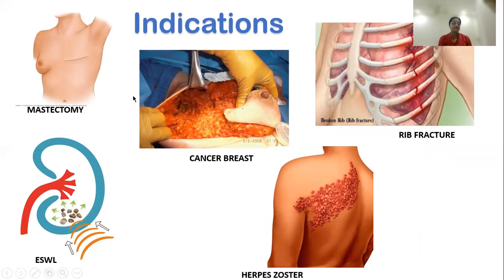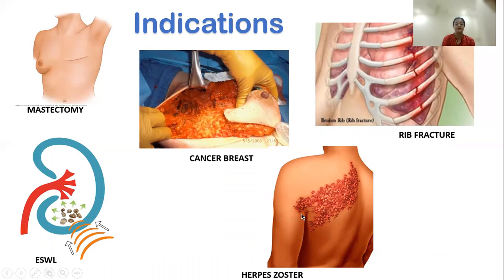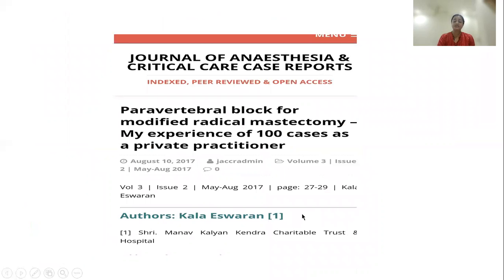Indications: for simple mastectomy, a single-level paravertebral block at thoracic level T5 is sufficient, as is the erector spinae plane block. For cancer breast surgeries involving the axilla or muscles, you need to add pec blocks or serratus anterior plane block along with a paravertebral block or erector spinae plane block. For rib fractures, continuous infusion of either thoracic paravertebral block or erector spinae plane block is needed. For renal, liver, and upper abdominal surgeries, an erector spinae plane block or paravertebral block is good enough, as is for herpes zoster.